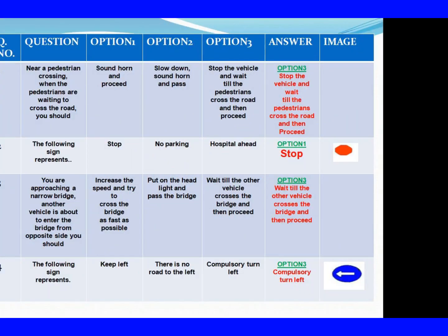Question 1: Near a pedestrian crossing, when the pedestrians are waiting to cross the road, you should. Option 1: Sound horn and proceed. Option 2: Slow down, sound horn and pass. Option 3: Stop the vehicle and wait till the pedestrians cross the road and then proceed. The right answer is Option 3: Stop the vehicle and wait till the pedestrians cross the road and then proceed. Question 2: The following sign represents. Option 1: Stop. Option 2: No parking. Option 3: Hospital ahead. The right answer is Option 1: Stop.